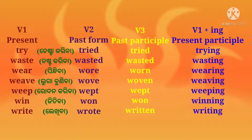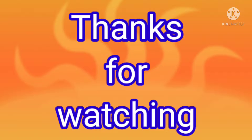Weep (radhana gariba): second form — wept; third form — wept; fourth form — weeping. Win (jitiba): second form — won; third form — won; fourth form — winning. Write (lekhiba): second form — wrote; third form — written; fourth form — writing. This is all about the different forms of verbs. Thank you.